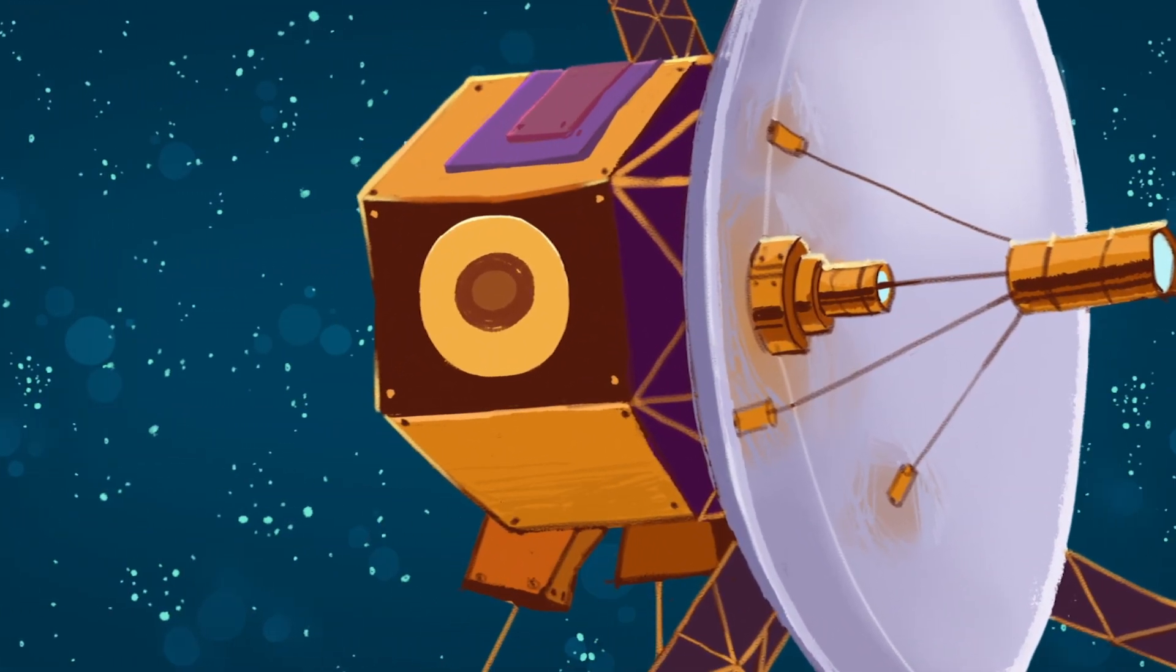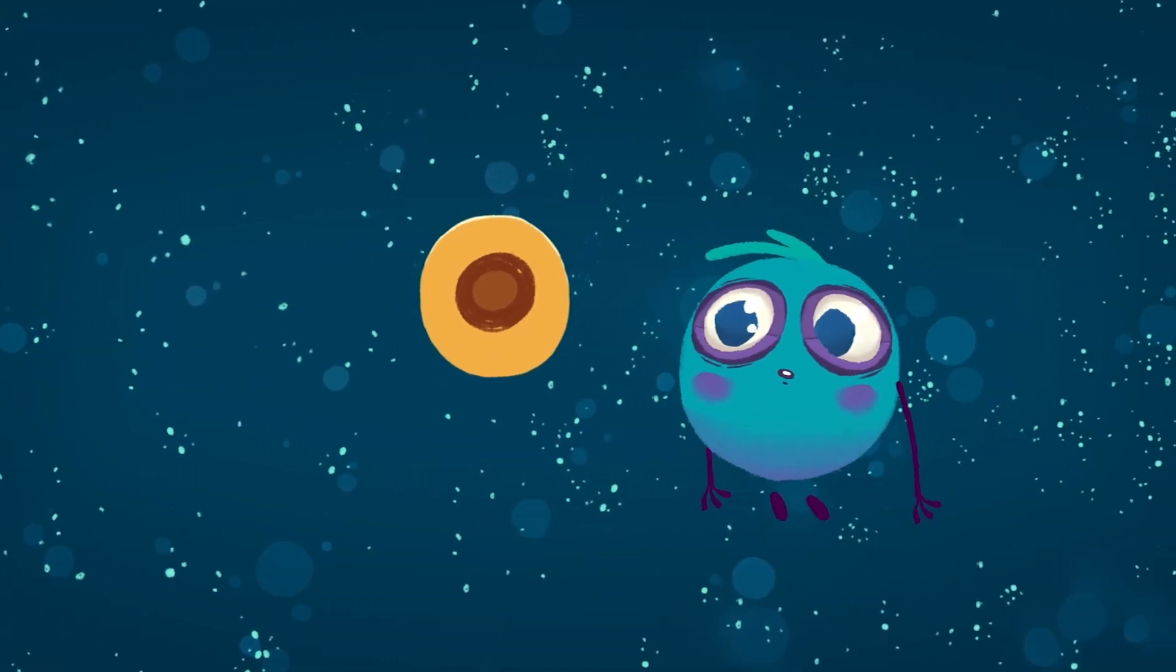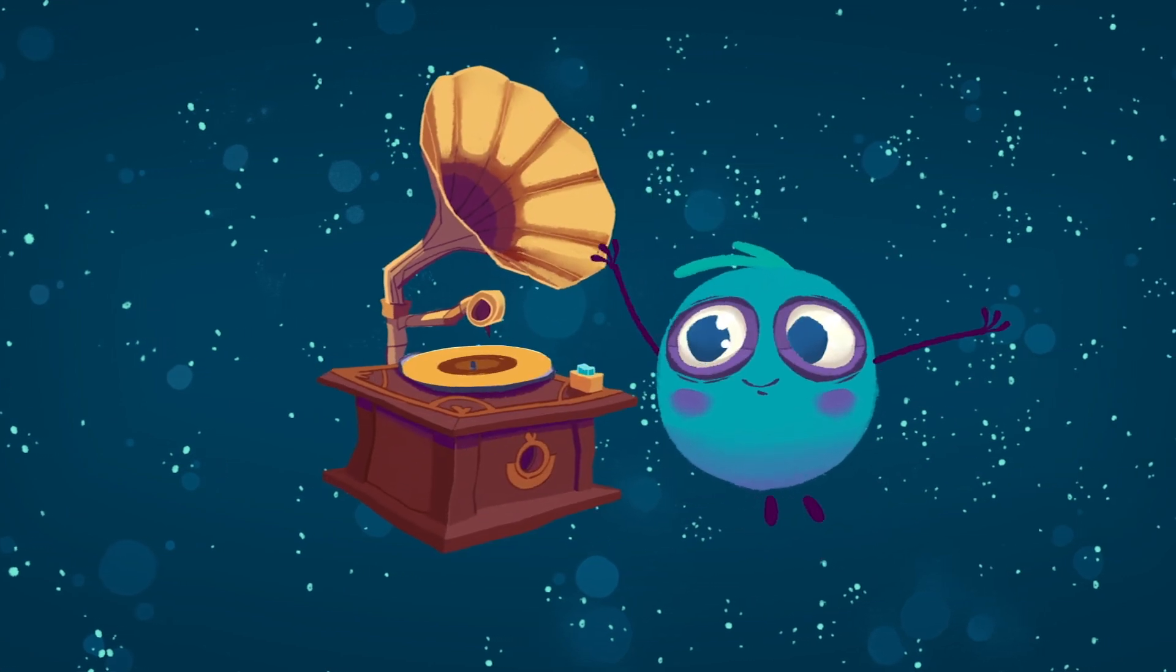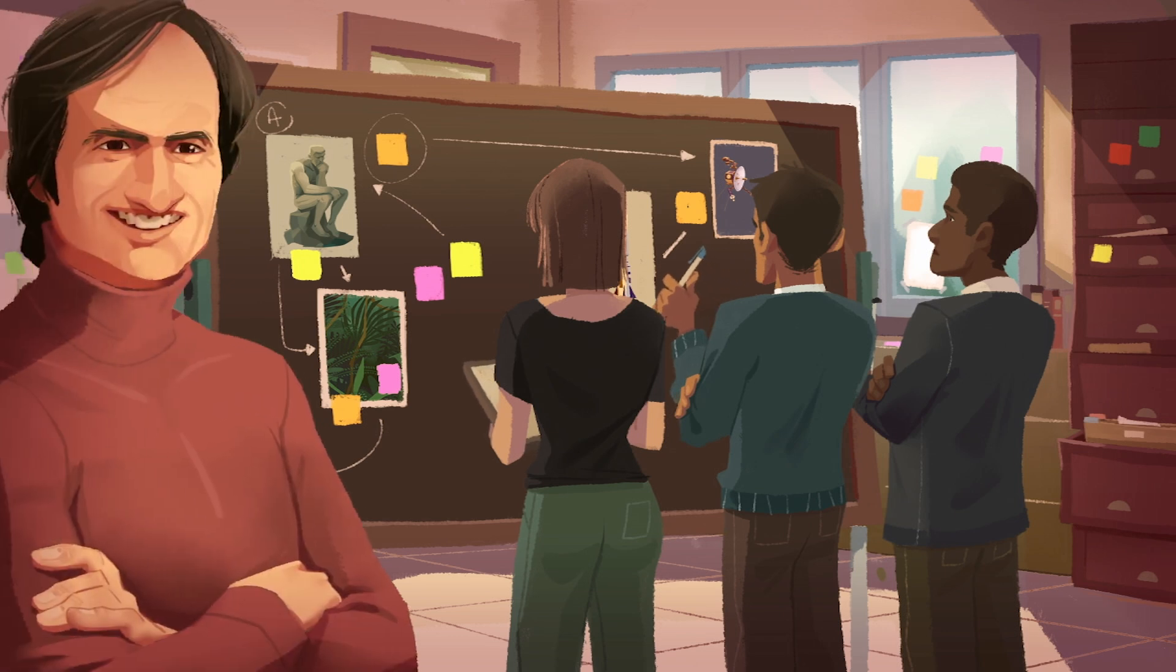Each spacecraft carried a golden phonograph record, a time capsule of sorts, that included clues and messages meant to convey the story of human civilization. The contents of these gold-plated copper disks were chosen by a committee, chaired by American astronomer and author Carl Sagan.